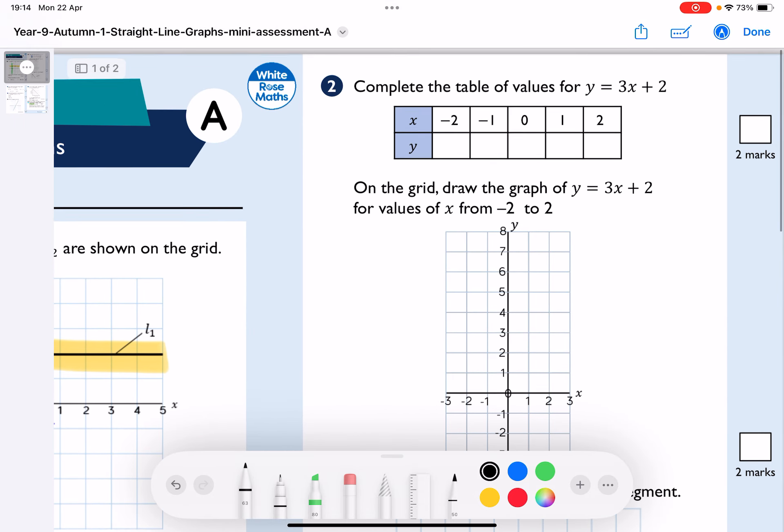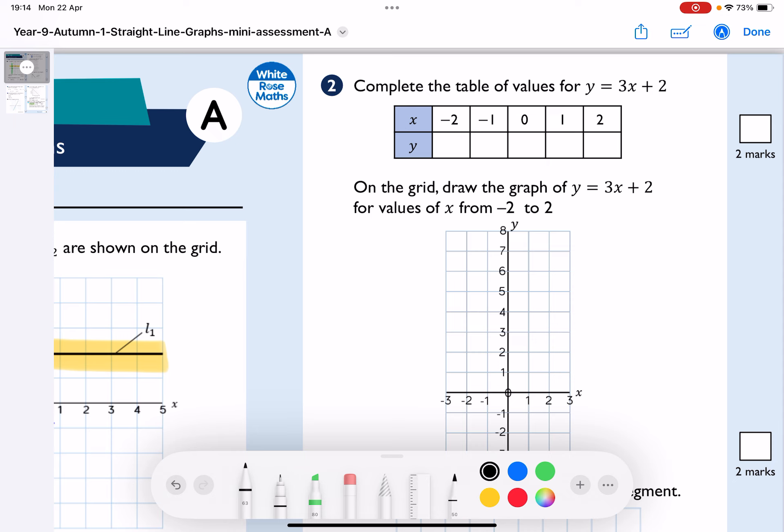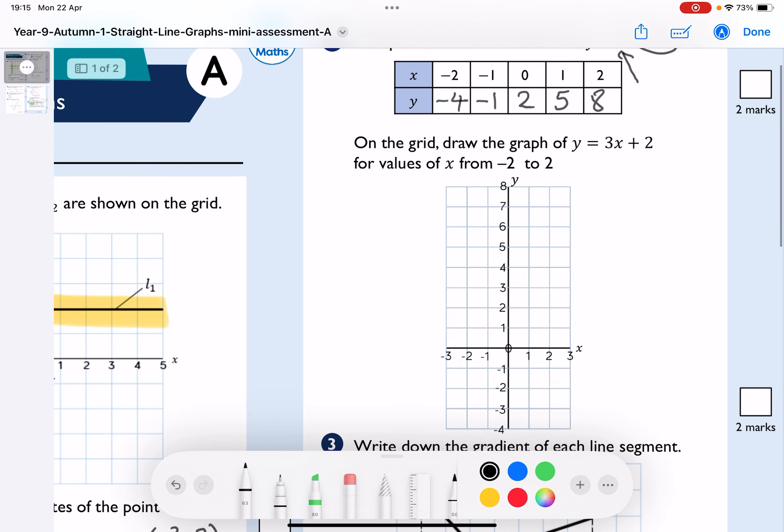So complete the table of values for y equals 3x plus 2. When I do anything like this, I know that at 0, the value will be 2, that's the constant. And I could substitute values in, but in fact, for a straight line graph, I now know that this number here, the number in front of x, the coefficient of x, is 3. And that tells me that the gradient is 3, so essentially, this is going up by 3, and goes back by 3. So if I start at 2, if I add 3, I get 5 and 8, if I take 3, I've got minus 1, minus 4, and it's that easy really.